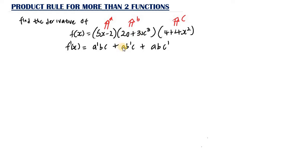So the remaining functions stay as-is after taking the derivative of the first. Then plus the first function multiplied by the derivative of the second function, then multiplied by the third. Then plus the first function multiplied by the second function, then multiplied by the derivative of the third function. You can expand this formula to fit as many functions as you have — seven, eight, nine functions. Just take the derivative of one at a time, multiply by each of the others, and take the sum of everything.